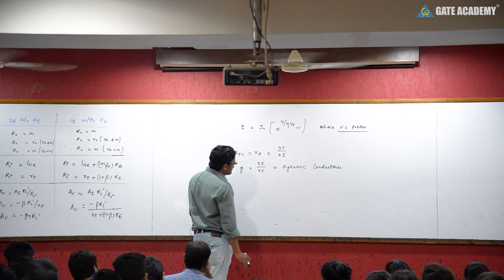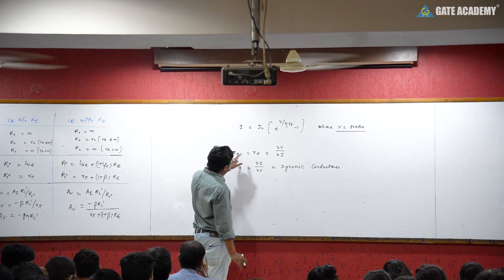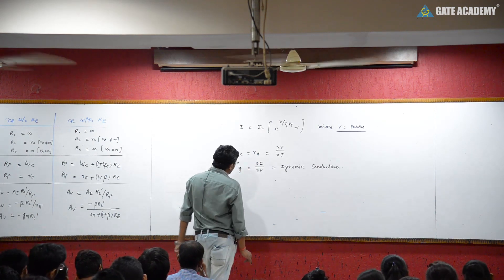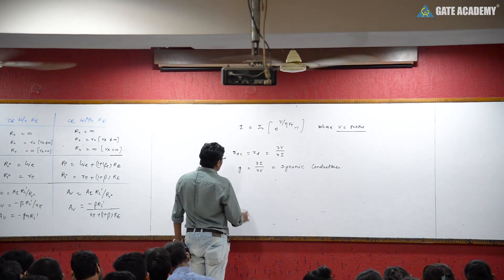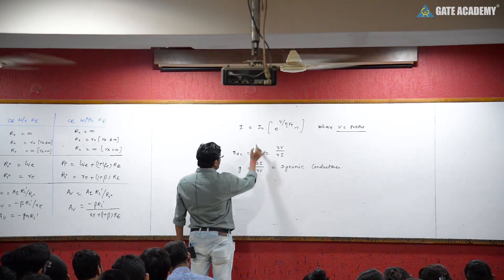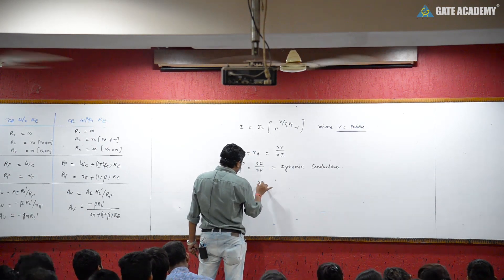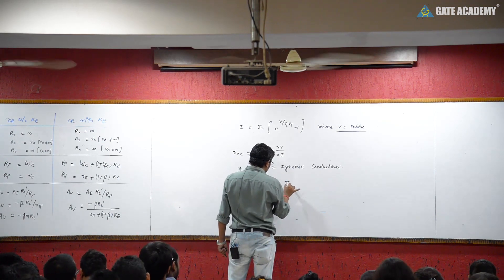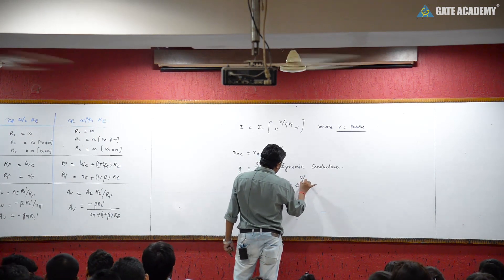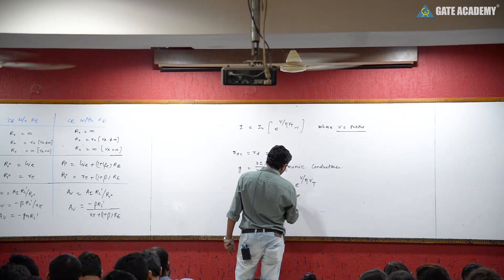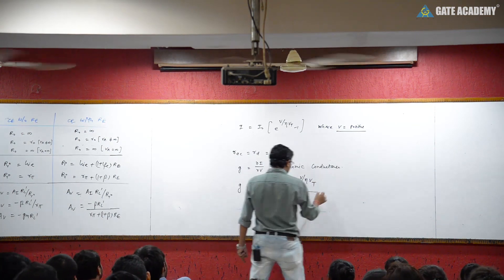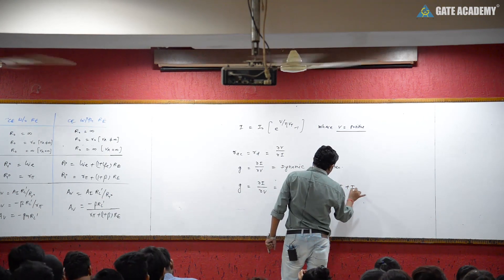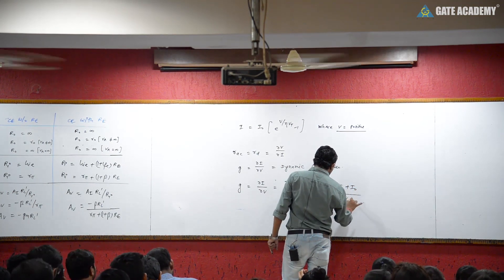AC Resistance or Dynamic Resistance is delta V upon delta I, and Dynamic Conductance is small g. When we differentiate delta I upon delta V from the diode equation, the answer is I₀ times e raised to V upon eta Vt, divided by eta Vt. After solving, we replace to get I plus I₀ divided by eta Vt.